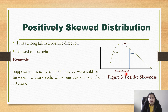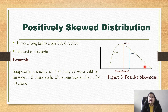To summarize: positively skewed data has a long tail in the positive direction and is skewed to the right. One example is a society of 100 flats where 99 were sold between 1 to 5 crores while one was sold for 10 crores. Here 10 crores is the outlier — a higher value — so the mean shifts towards the right, making this positively skewed data.